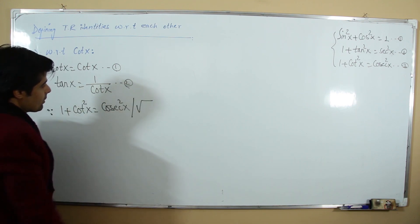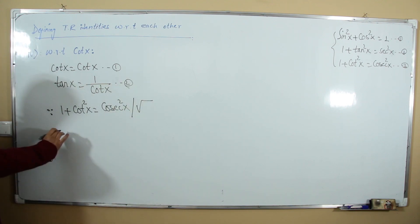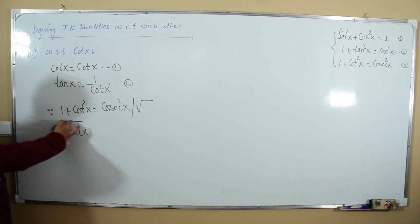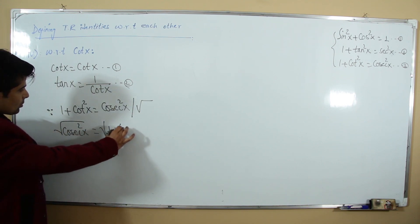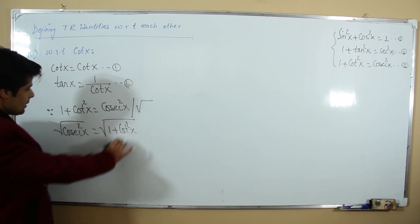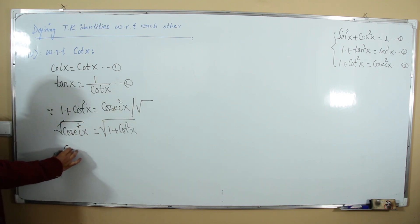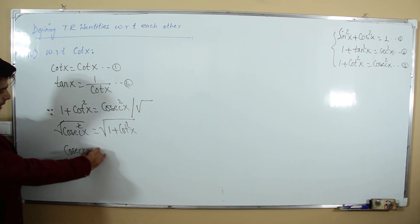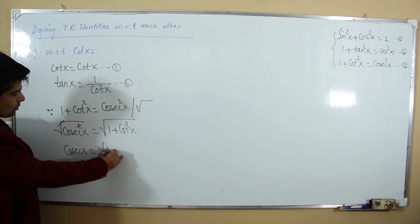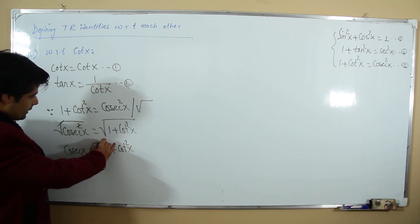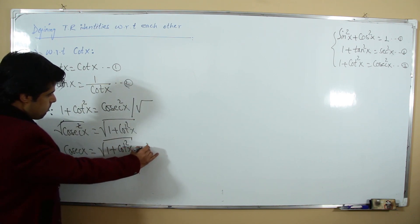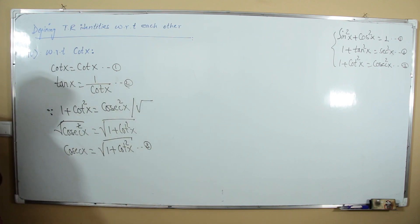Taking the square root of both sides: csc x = √(1 + cot²x). This is our third relation.